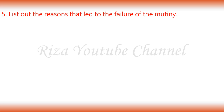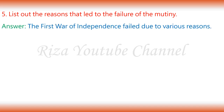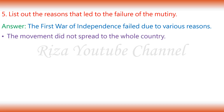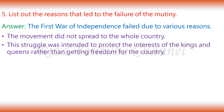5. List out the reasons that led to the failure of the mutiny. The first war of independence failed due to various reasons. The movement did not spread to the whole country. The unity among the British and the disunity among the Indian soldiers also led to the failure. There was no proper direction or proper leadership and discipline. This struggle was intended to protect the interests of the kings and queens rather than getting freedom for the country.